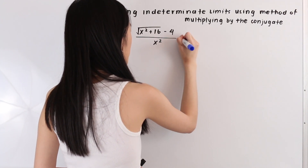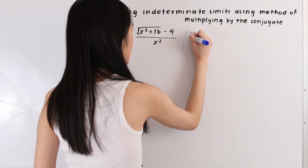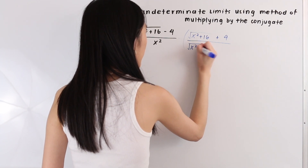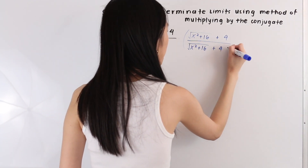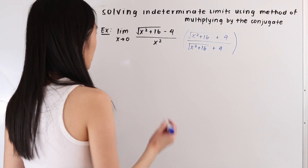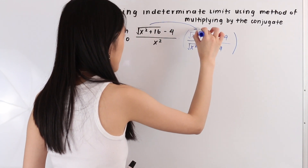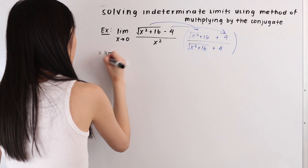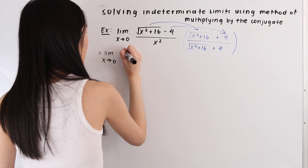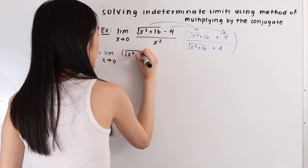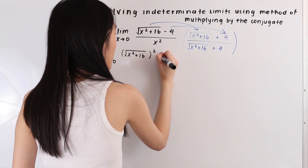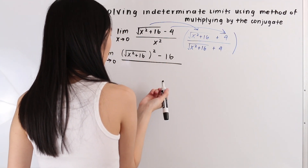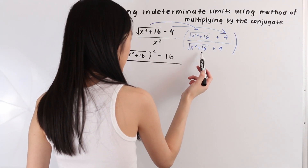So we're going to multiply by the square root of x squared plus 16 plus 4, over the square root of x squared plus 16 plus 4. Now let's multiply this out. For the numerator we only need to multiply the first two terms because the other two terms cancel out. So we have the square root of x squared plus 16, squared, minus 4 times 4 which equals 16, all over x squared times the square root of x squared plus 16 plus 4.